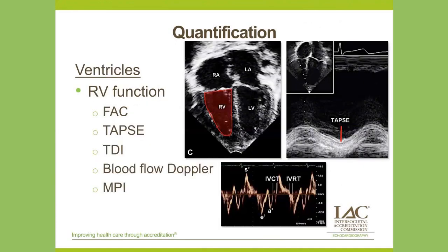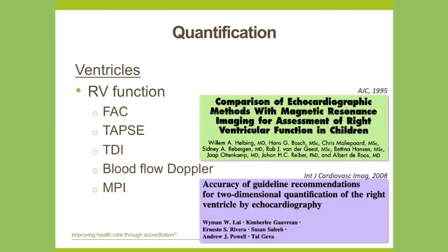Right ventricular function can be evaluated by measuring fractional area change, tricuspid annular plain systolic excursion, tissue Doppler and blood flow spectral Doppler indices, and the myocardial performance index. However, these indices of RV function are pretty limited. We use cardiac MRI as the gold standard for RV size and function assessment. Studies have shown poor correlation of echo-derived right ventricular volumes to those derived from MRI — a 1995 Netherlands study showed only moderate correlation with significant systematic errors, and a more recent study by Wyman Lai showed that 2D echo RV measurements are generally smaller than MRI values with weak correlation.